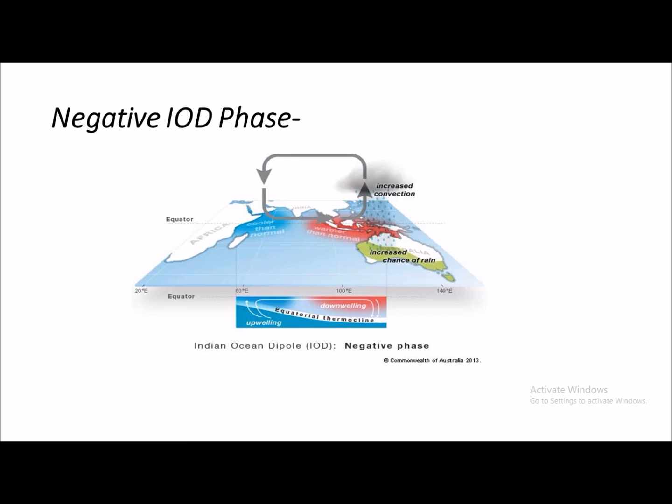During the negative IOD phase, the westerlies are weak, warm water develops around the eastern Indian Ocean, and cold water develops over the western Indian Ocean. Convective activity takes place in the eastern Indian Ocean, leading to heavier rainfall in Indonesia and Australia. The equatorial thermocline is shallow in the western part and deep in the eastern Indian Ocean.